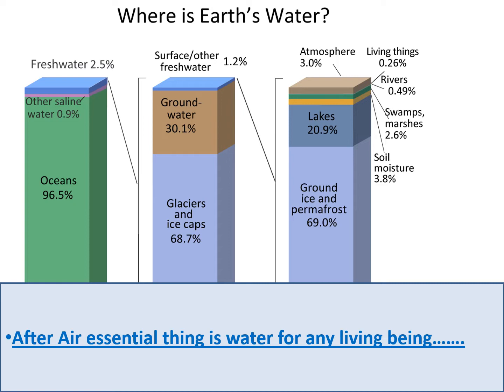Of that 2.5% fresh water, glaciers and ice caps account for 68.7%, and surface fresh water is only 1.2%. Of that 1.2%, water in the atmosphere is 3%, living things share 0.26%, rivers 0.49%, marshes and swamps 2.6%, and ground ice and permafrost — frozen soils — hold 69.0%. So surface pure water is present in a very small amount.